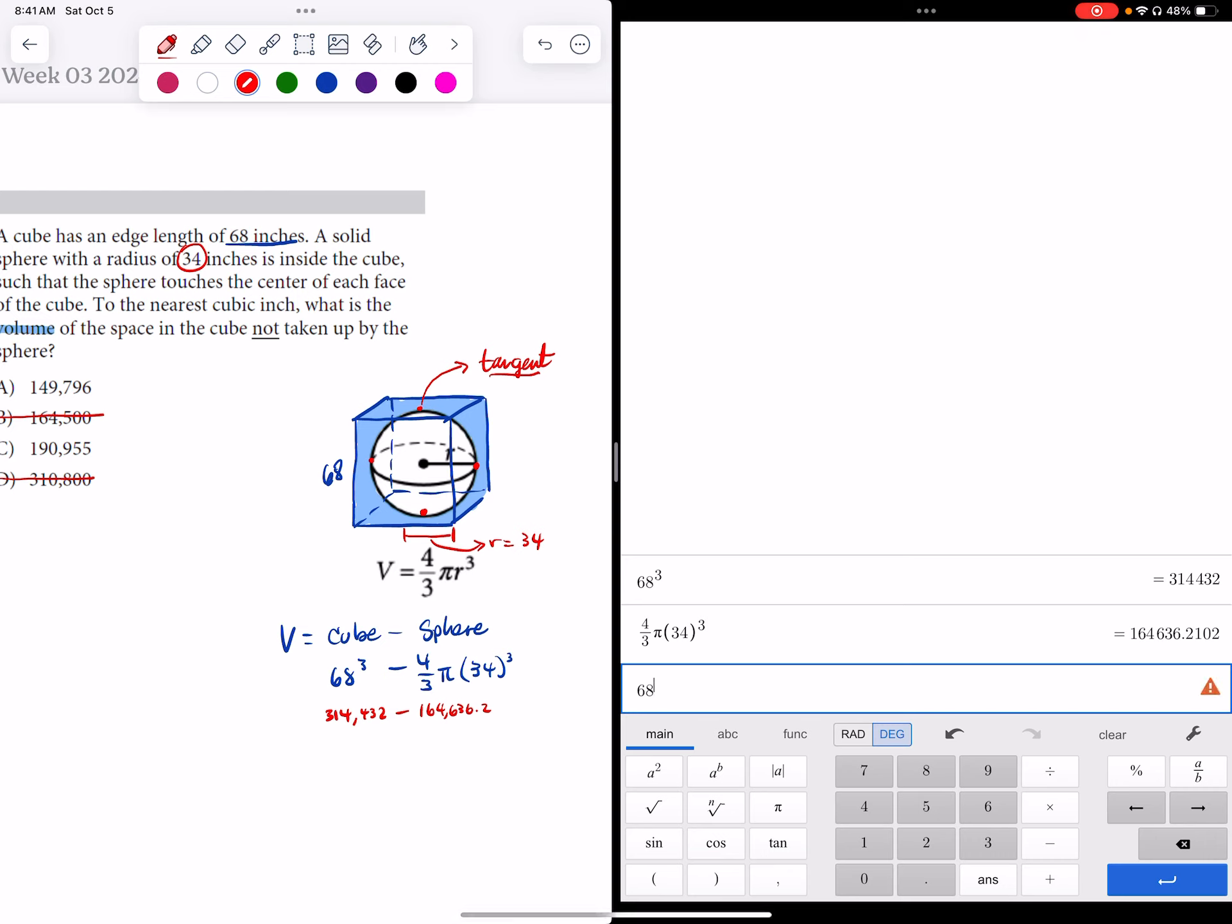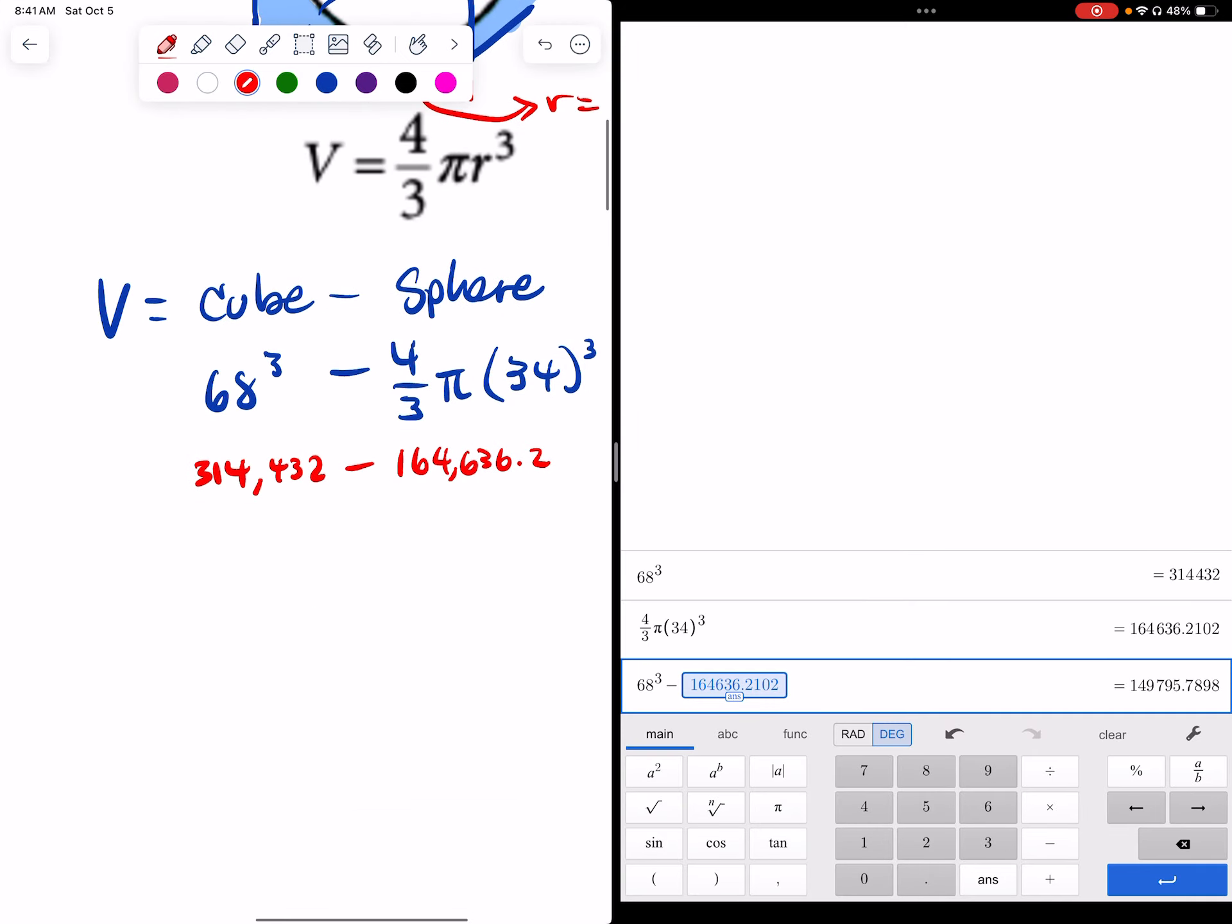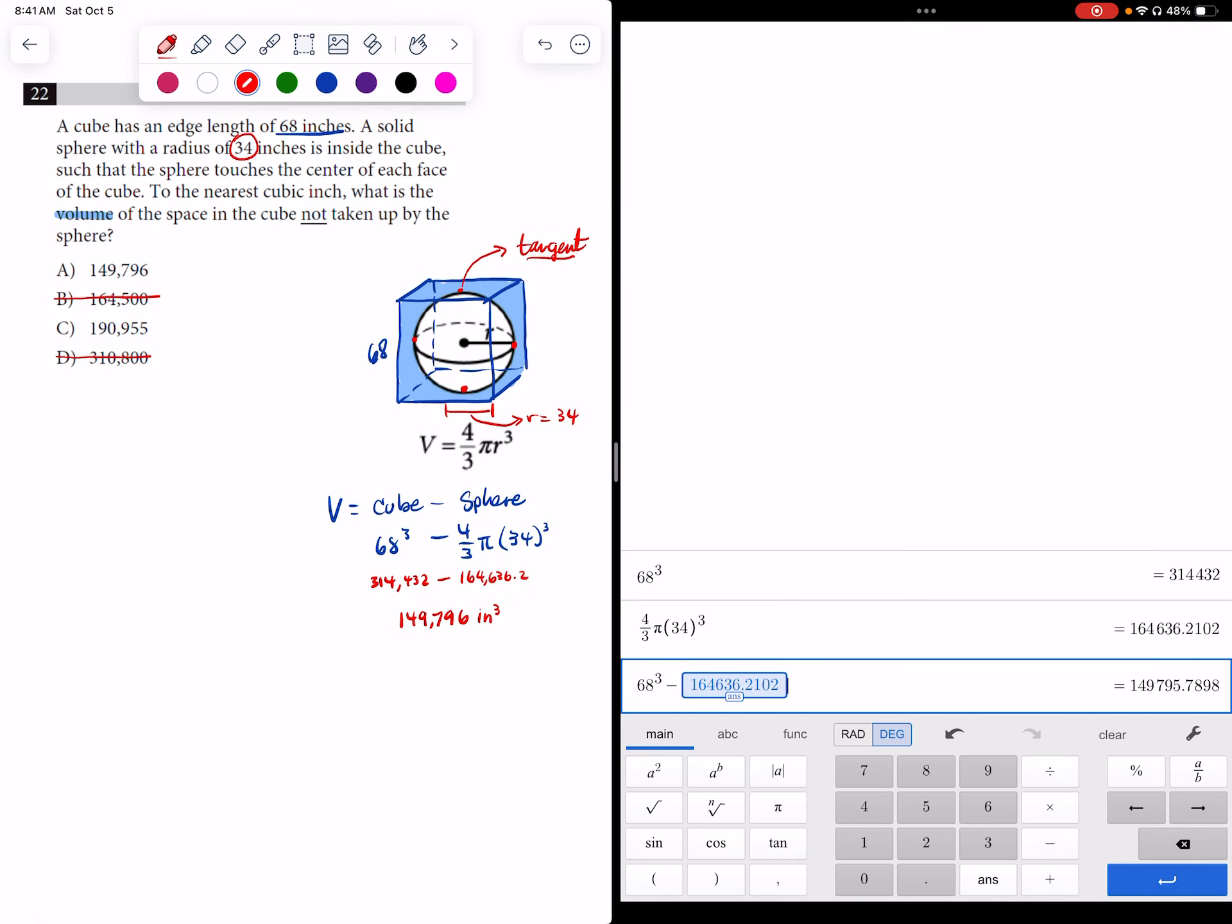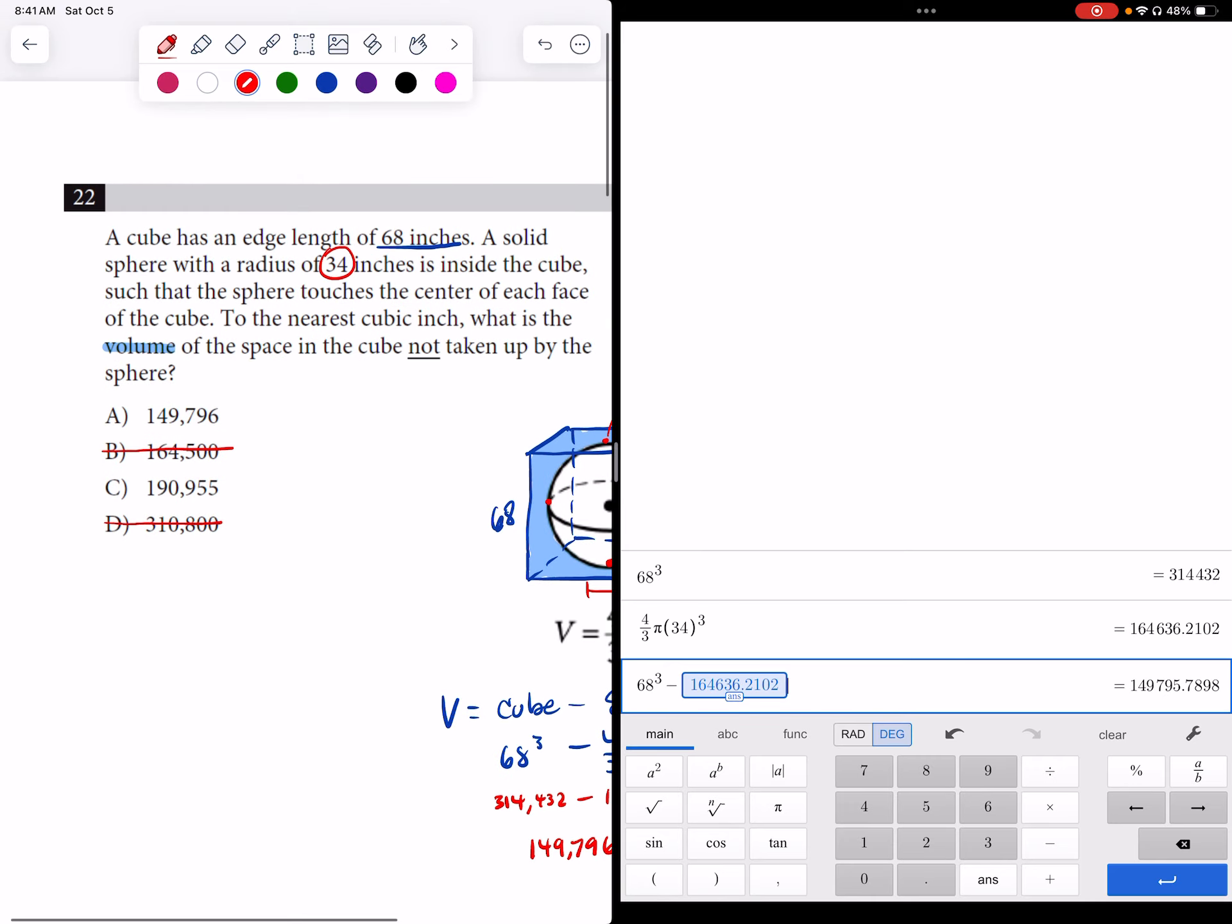So I'm left with just two of these answer choices here. And whenever I go ahead and do my subtraction, once again, I would have just done this on one complete line, sort of like this. So 68 cubed and then minus, let me get out of that exponent, and then minus the actual volume of the sphere. And rather than me type it in again, I'm just going to hit this ANS button, which is the previous answer that's on there. And we can see that we have a volume of approximately 149,795.7. So I'm going to round that to 96 cubic inches. Don't forget your units, folks, to get full credit. Anyway, so when I look at that answer choice, it is a very clear answer choice A.